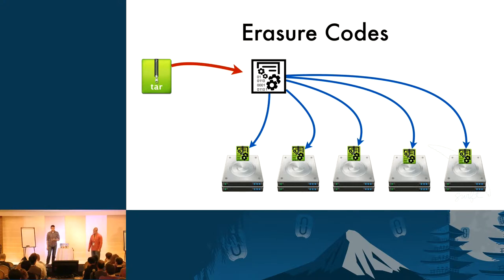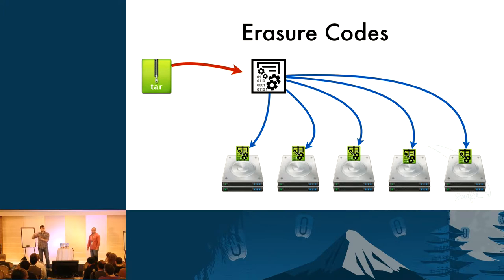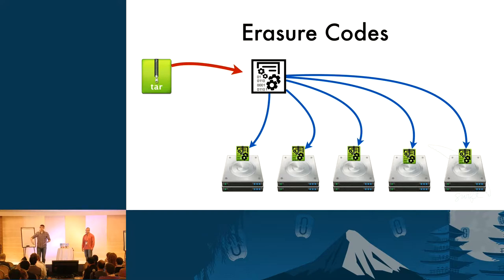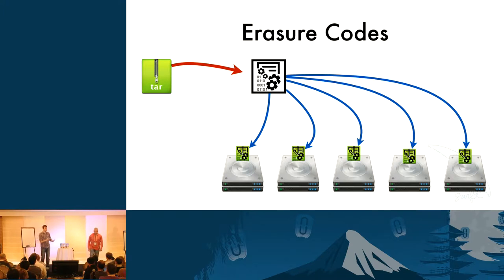What we worked on over the last two years in the Swift community is the ability to support erasure codes. We first implemented storage policies, which let you take a set of hardware and manage it differently from the rest of the cluster — so this kind of data is stored one way and another kind another way. Once we had that, we implemented erasure codes as a storage policy, so you can have a triple-replicated set of data and also an erasure-coded set, on the same or different hardware.